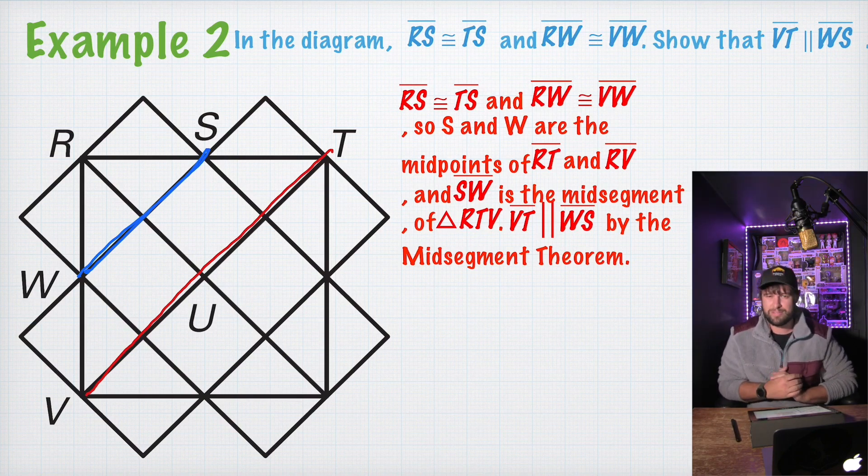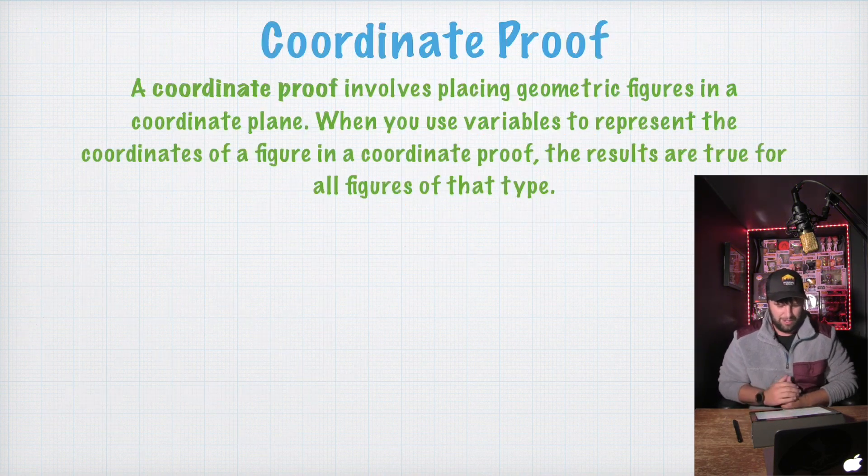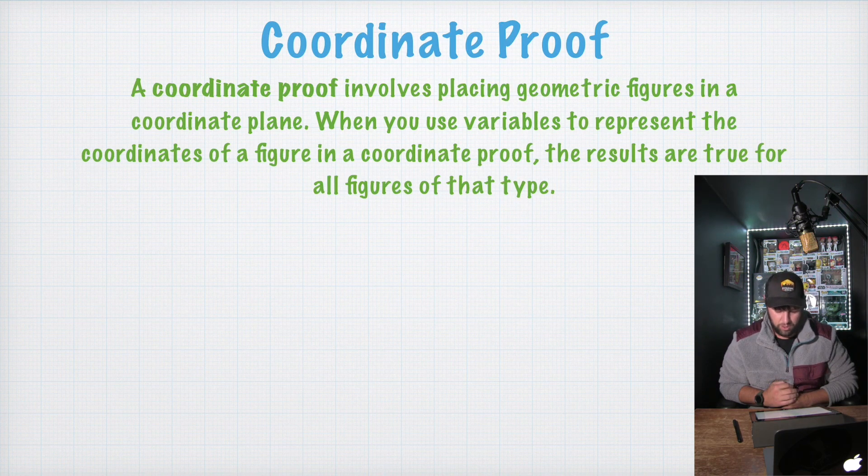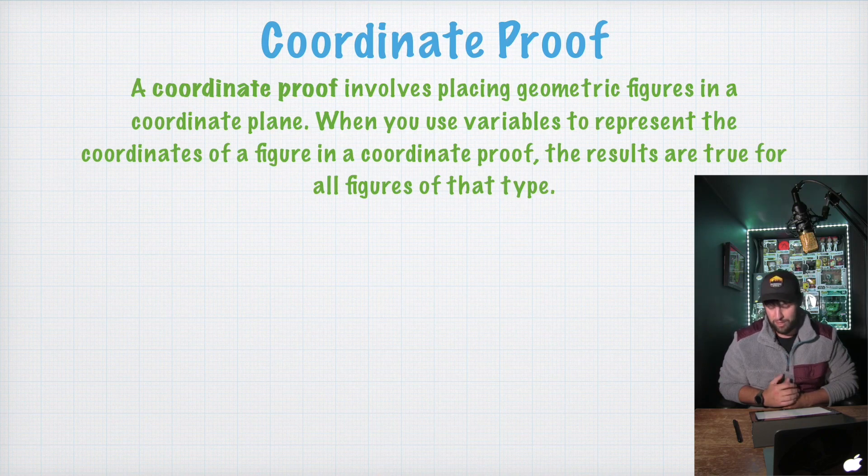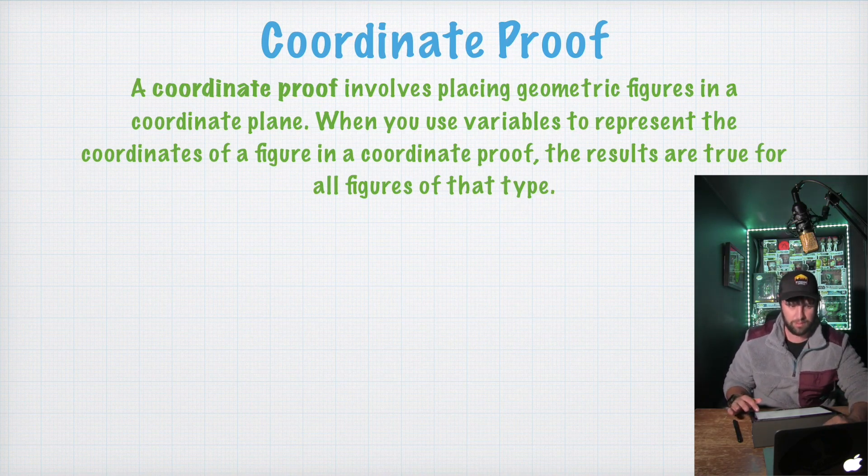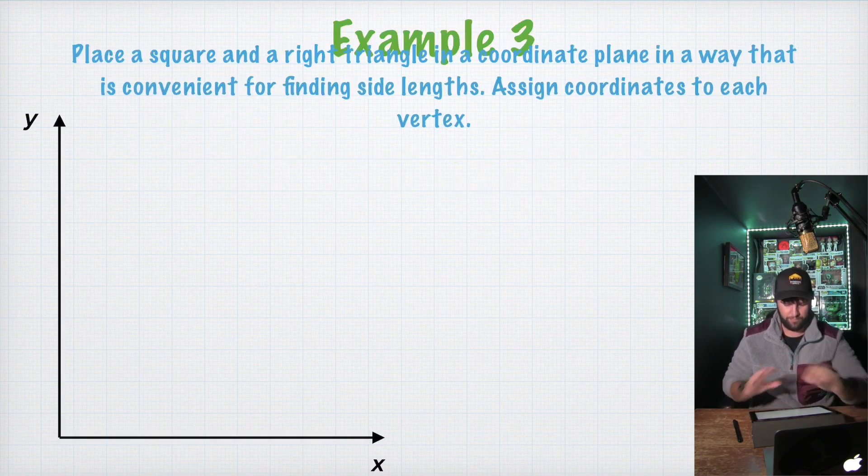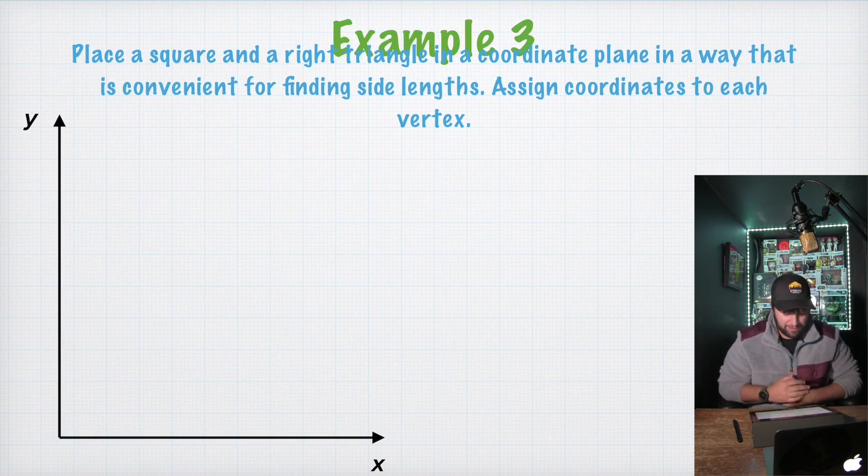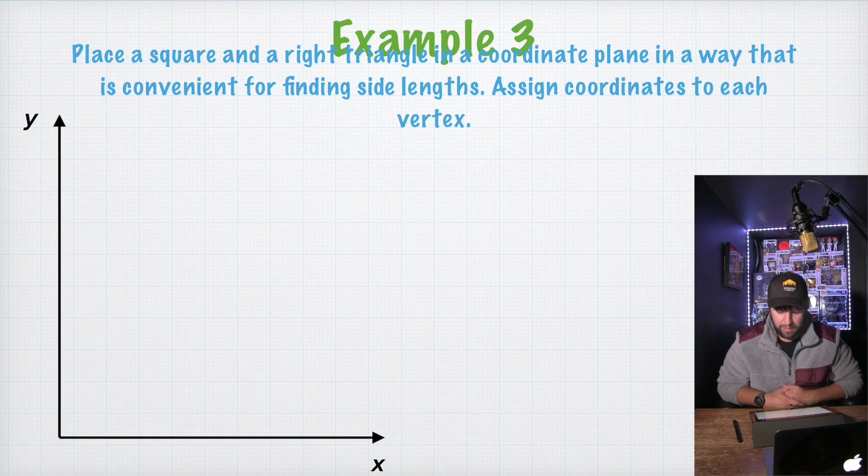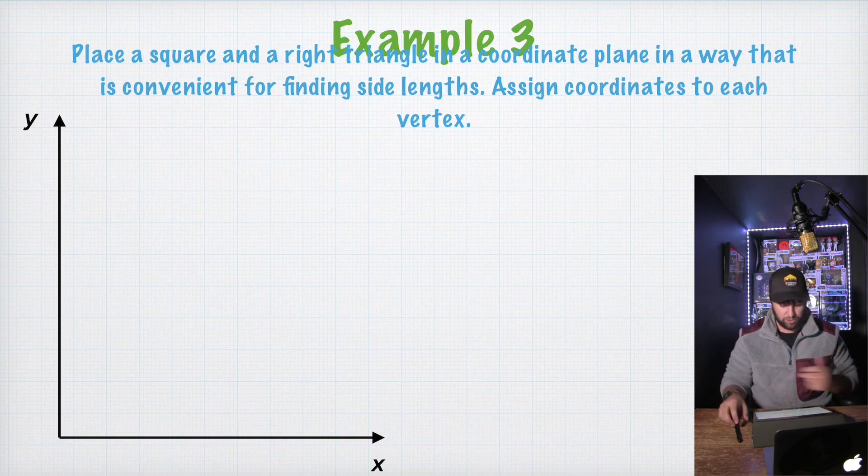So you start developing that logical thinking. I'm sure you're probably sick of hearing me say that by now, but I'm going to keep saying it. So let's keep on rolling. So a coordinate proof, a coordinate proof involves placing geometric figures in a coordinate plane. When you use variables to represent the coordinates of the figure in a coordinate proof, the results are true for all figures of that type.